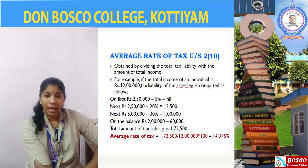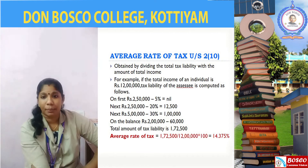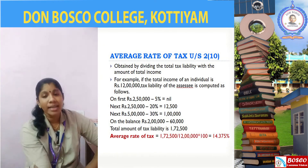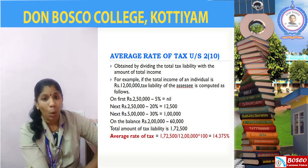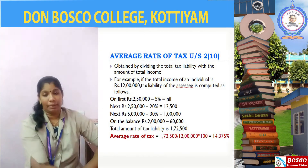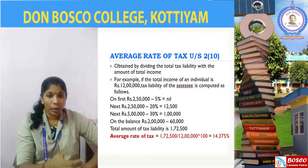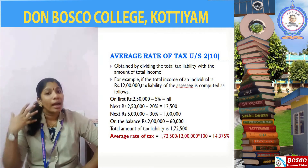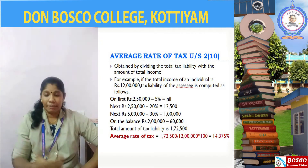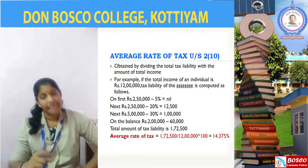Let us look into an example. Suppose an individual has a total income of rupees 12 lakh under the head of income. Total income is 12 lakh. Let us look into how much tax is payable by him to the government, and illustrate this example.